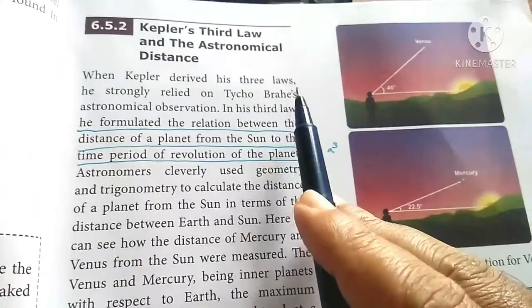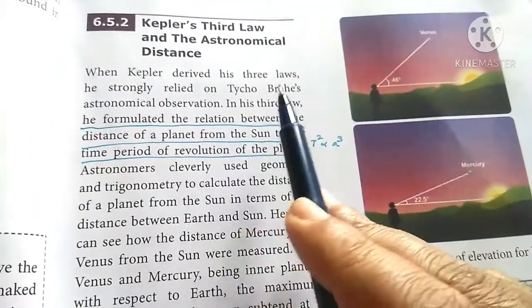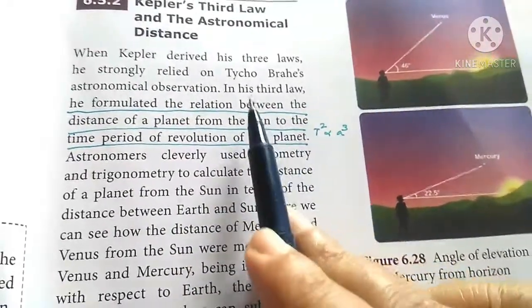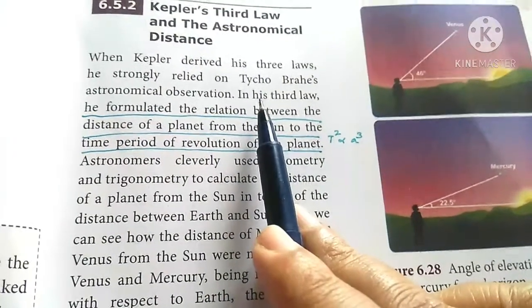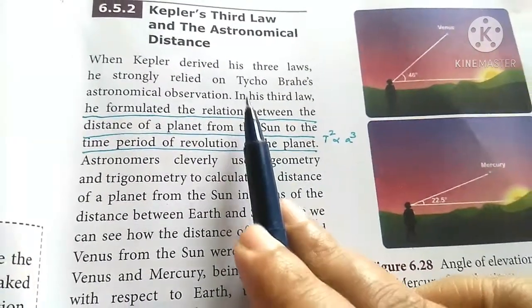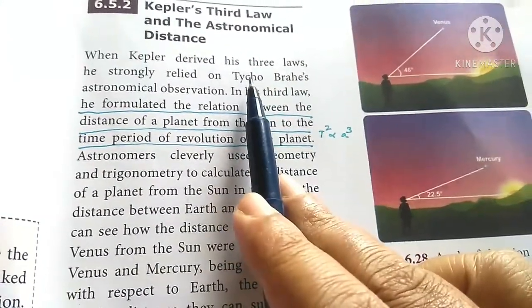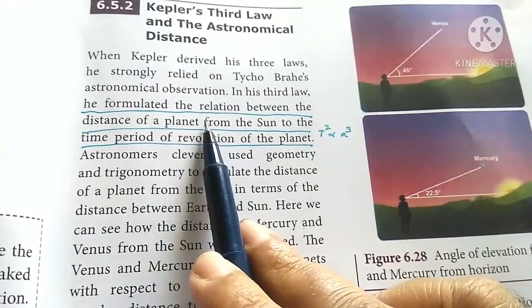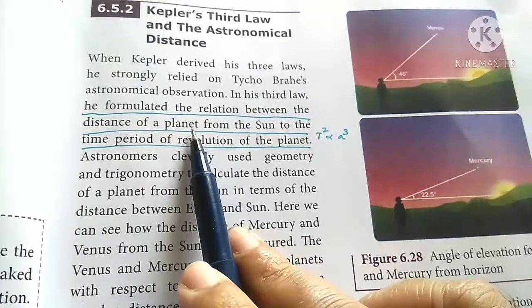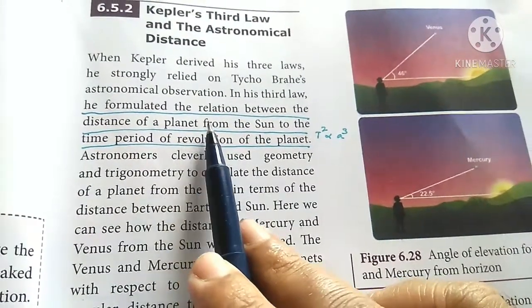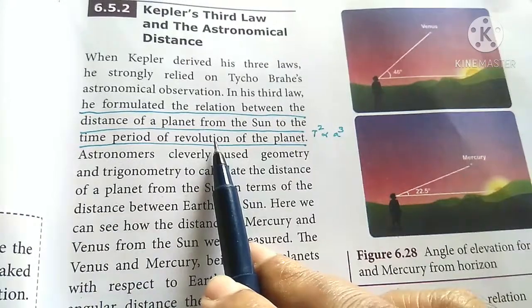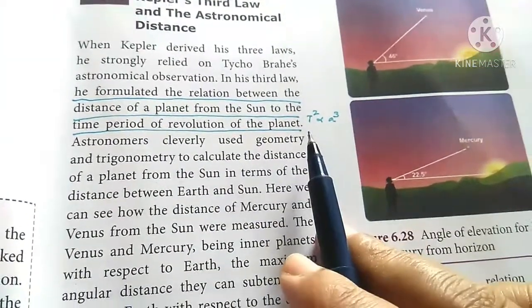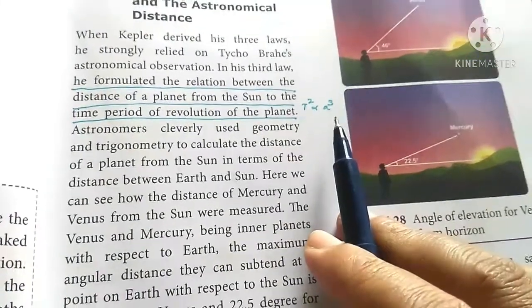Kepler derived his three laws. He strongly relied on Tycho Brahe's astronomical observation. The Third Law shows the relation between distance of the planet from the sun to the time period of revolution of the planet. T squared proportional to a cubed for the time period.